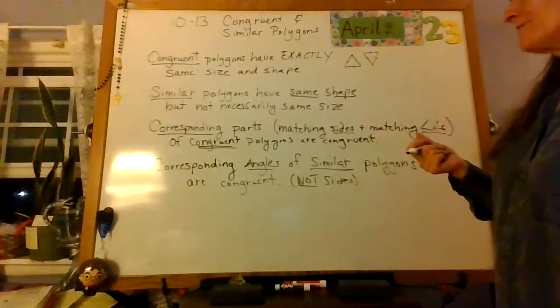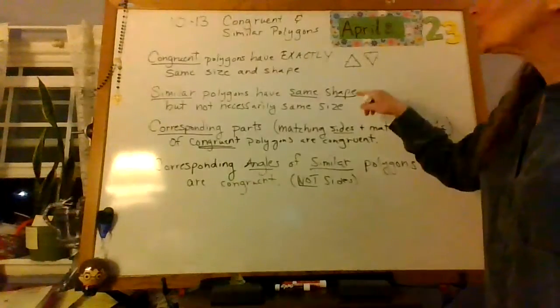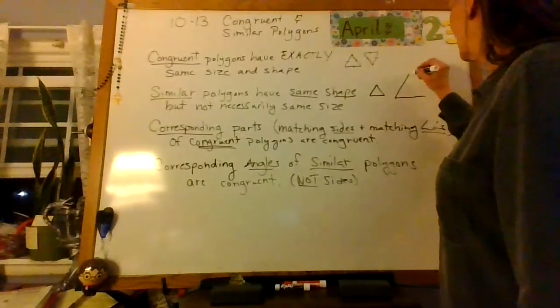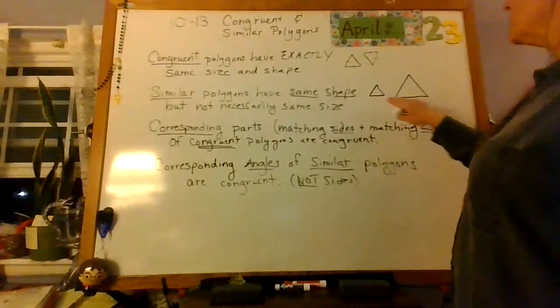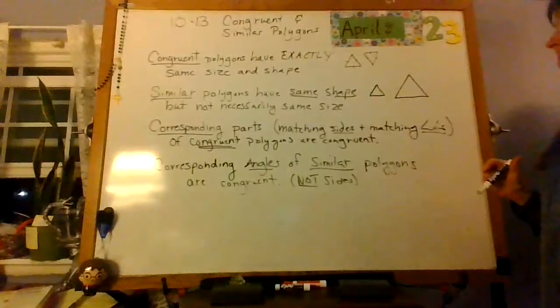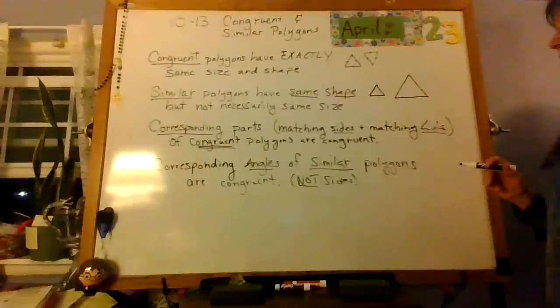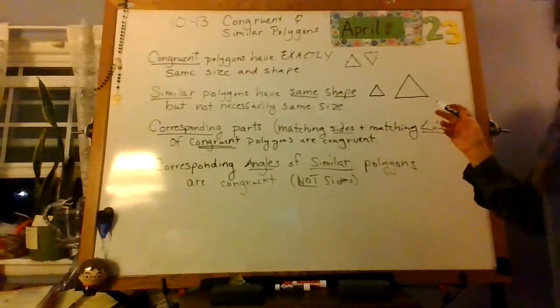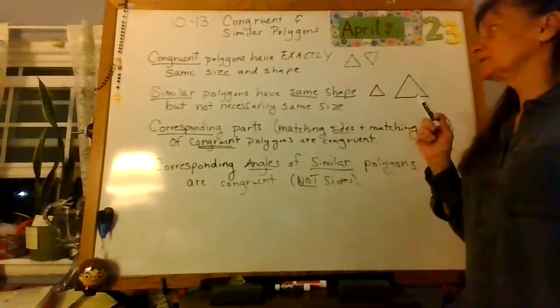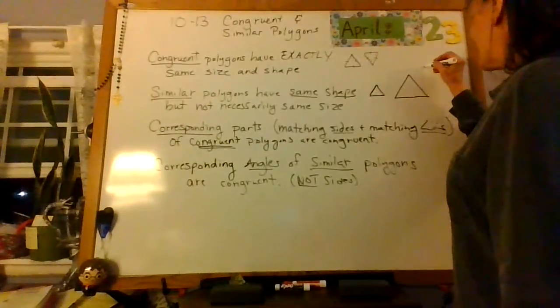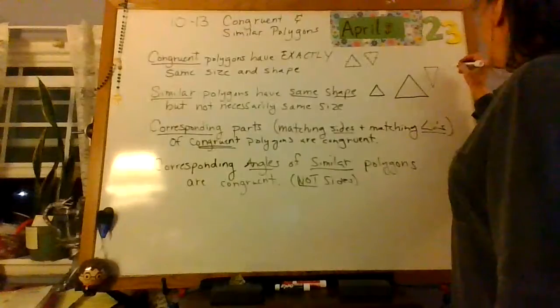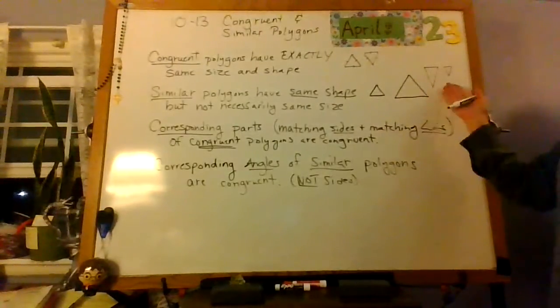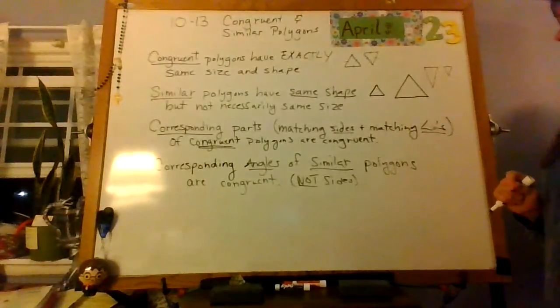All right. Similar polygons have the same shape, but not necessarily the same size. So, I might have something like this. Those are both equilateral triangles. They're the same shape, but they are not necessarily the same size. They could have been. It's possible that they could be, but then they'd be congruent. It doesn't have to look like that, obviously. It could be something like that. Those are both the same shape, but not the same size. Those are similar.